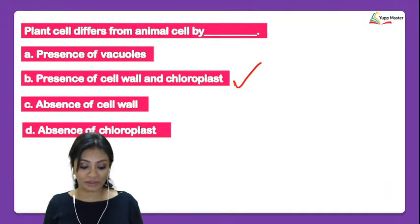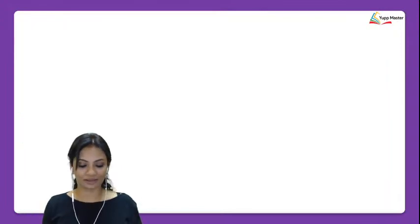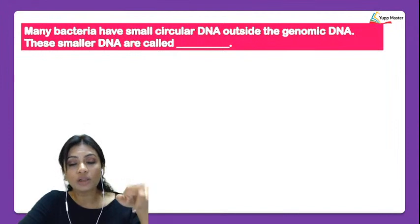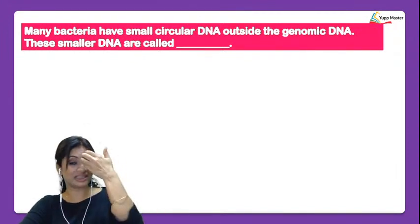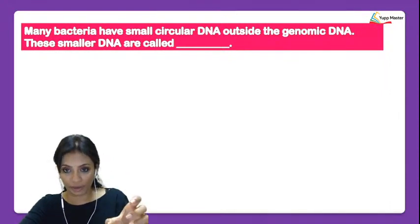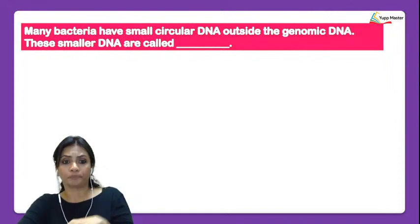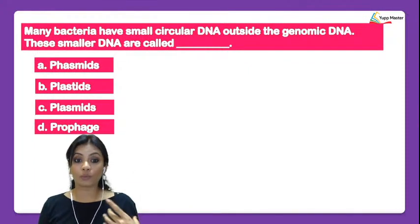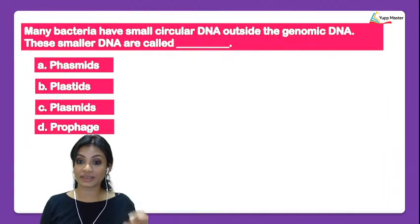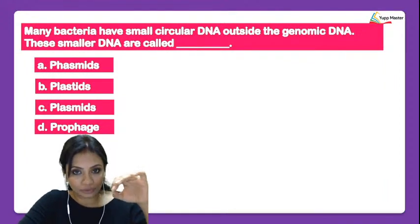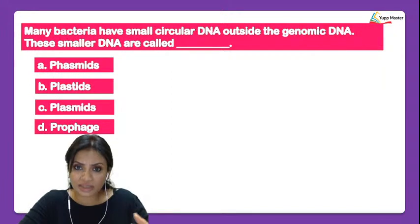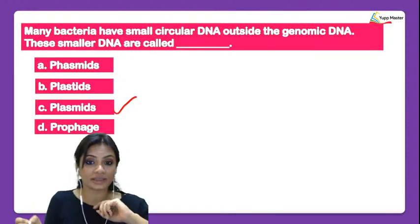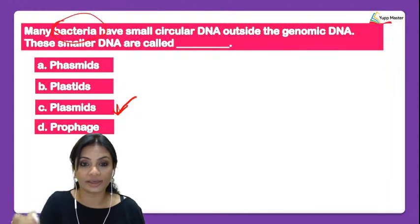If you know the answers, type them in the chat box. Next question: many bacteria have small circular DNA outside the genomic DNA — besides the normal DNA in the nucleoid, there are other DNA present outside. These smaller DNA structures — are they phasmids, plastids, plasmids, or prophage? Talking about prokaryotic cells, circular DNA that gives prokaryotic cells greater resistance and antibiotic resistance — these structures are called plasmids, present in bacteria.